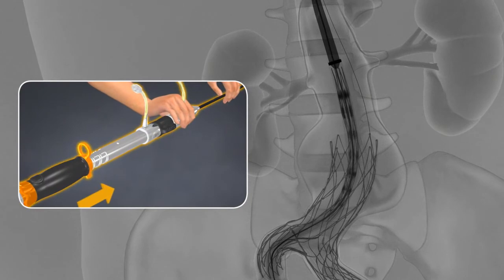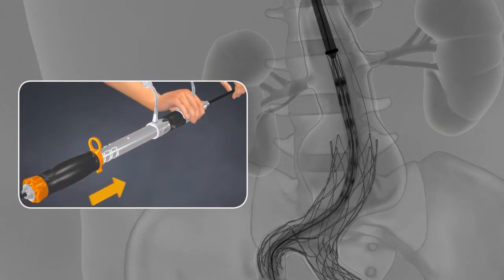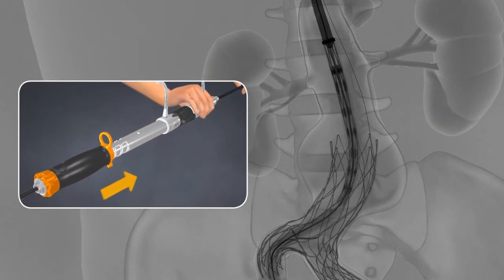Position the delivery system so that at least one covered stent segment is above the most distal renal artery.